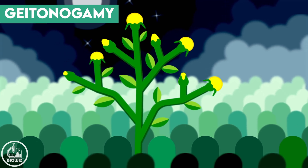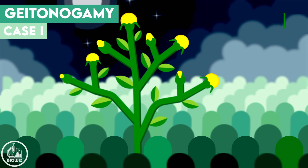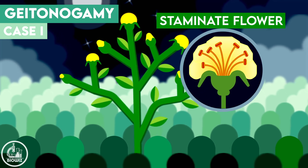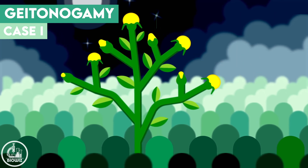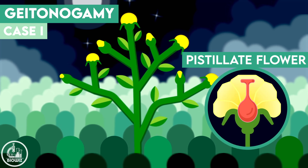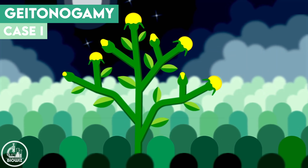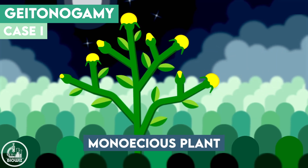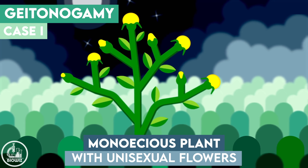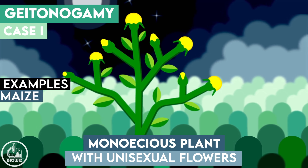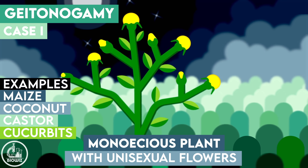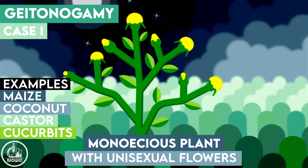The first is if the plant species has unisexual flowers, i.e. male or staminate flowers and female or pistillate flowers, but on the same plant. So it can occur in monoecious plants having unisexual flowers. Some examples of such plants are maize, castor, cucurbits, coconut, etc.